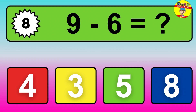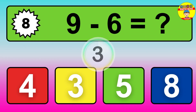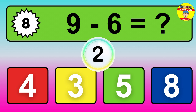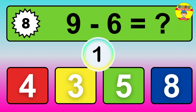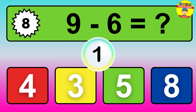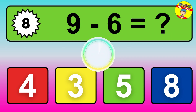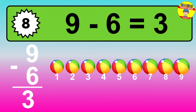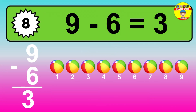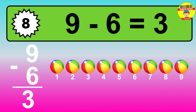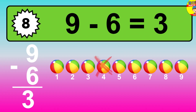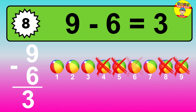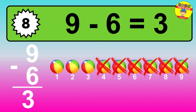Question 8: 9 minus 6 equals what? The answer is: 9 minus 6 is 3. Let's count it: 1, 2, 3.